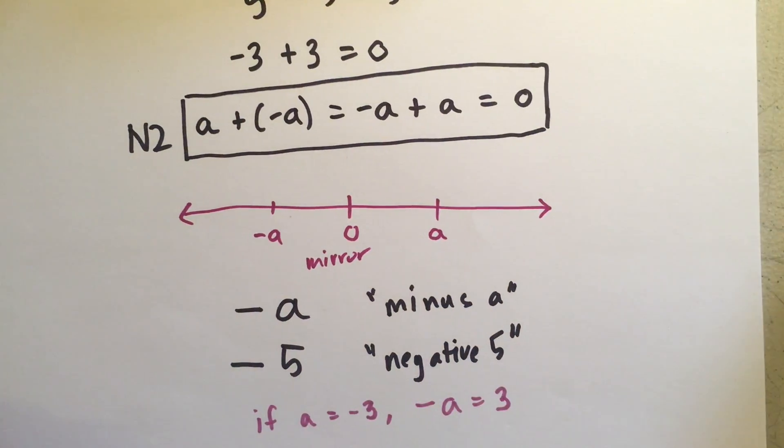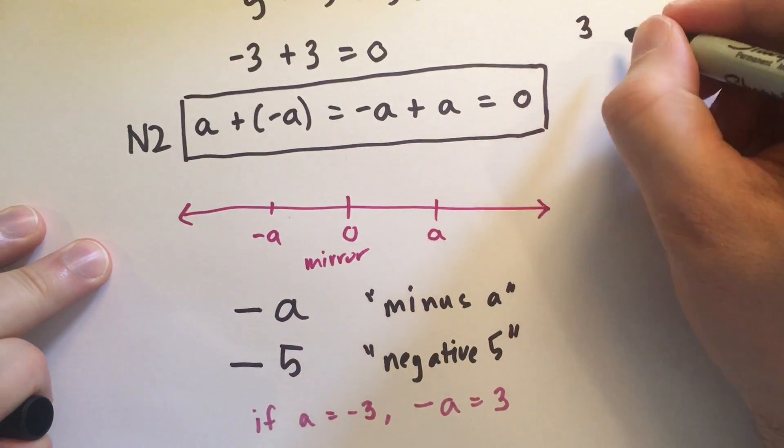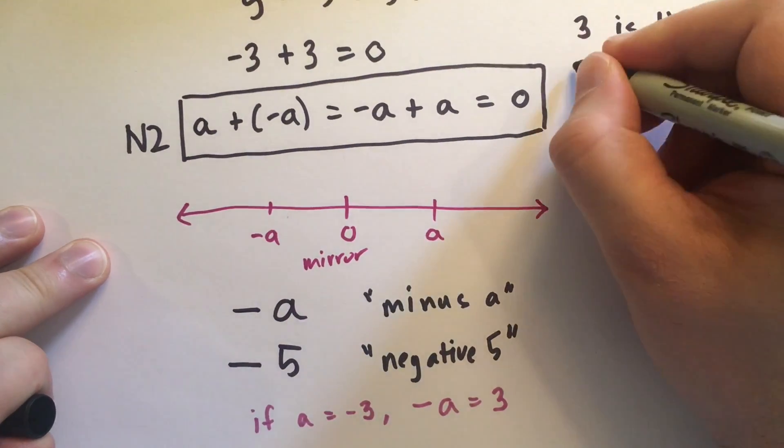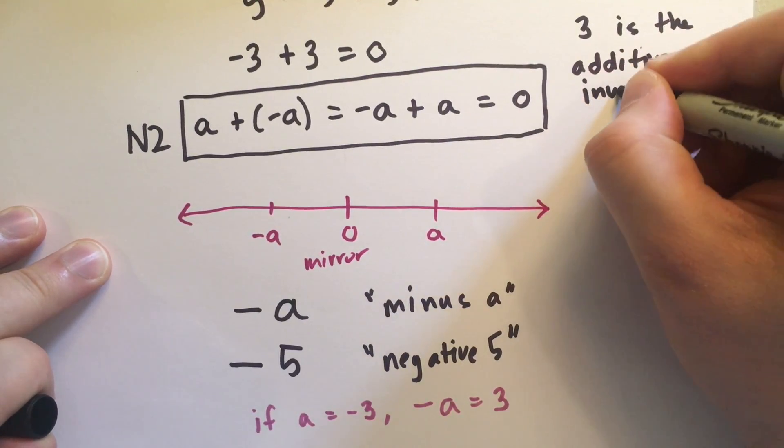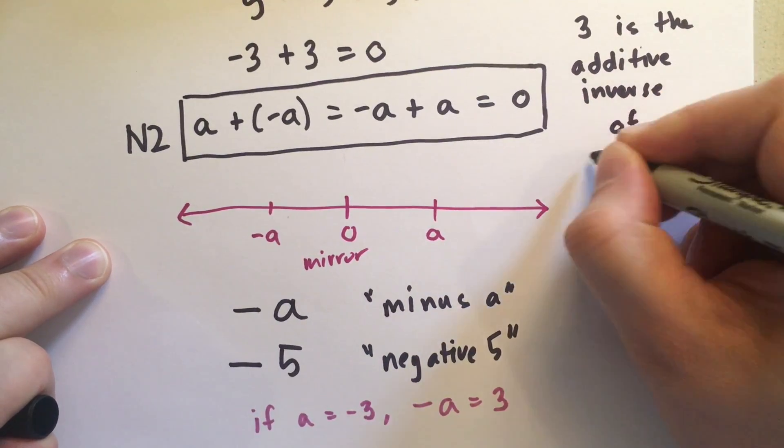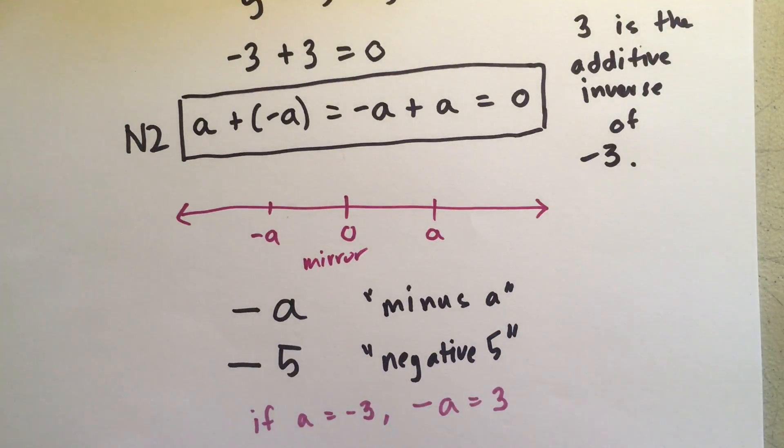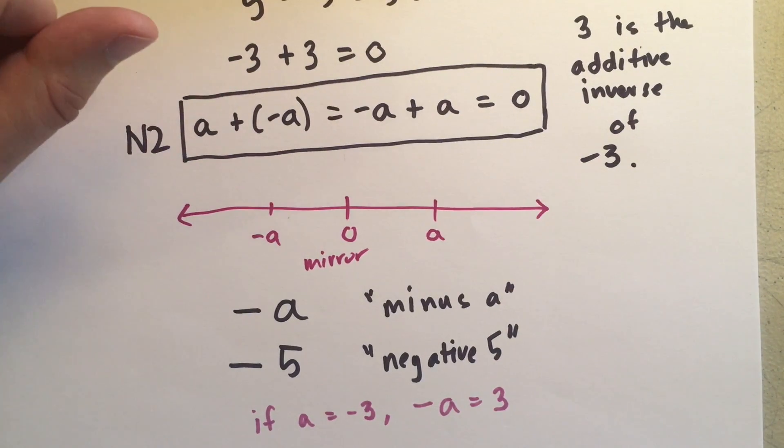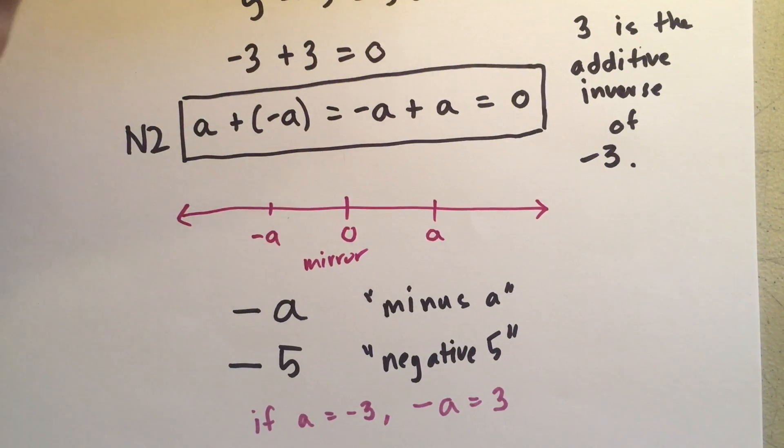And one more thing, we call it the additive inverse. That's right. So, we'll say 3 is the additive inverse of negative 3. And negative 3 is the additive inverse of 3. That's a number, a word that you'll hear again and again. Inverses, additive, multiplicative inverses. And we'll get into the rules for addition in the next section.